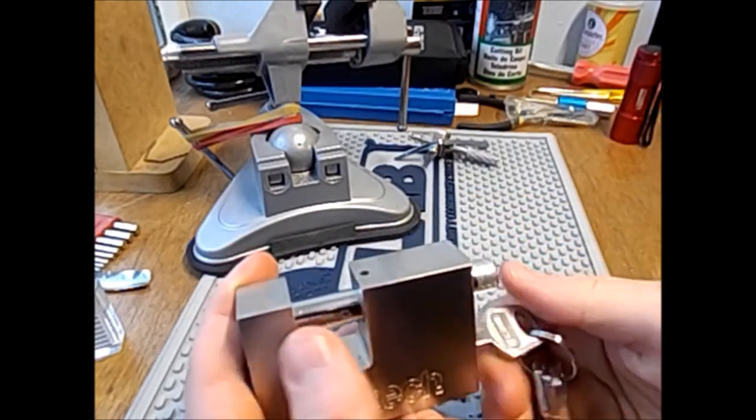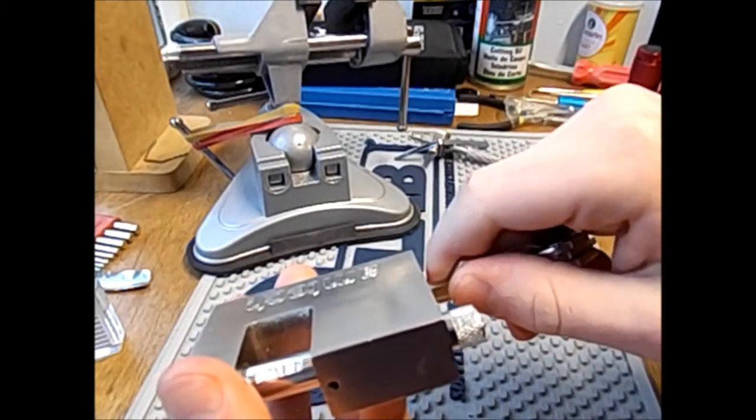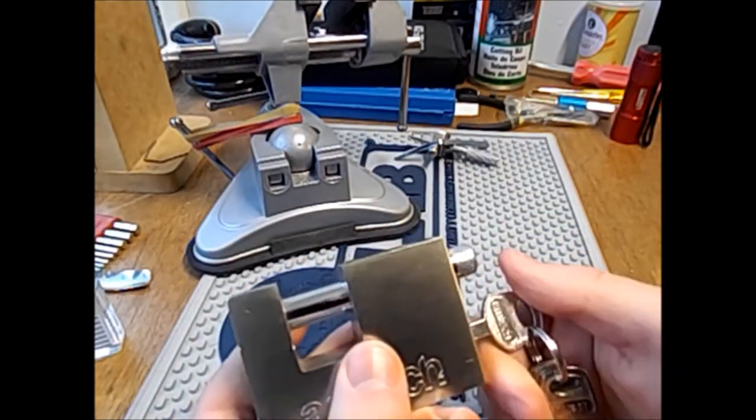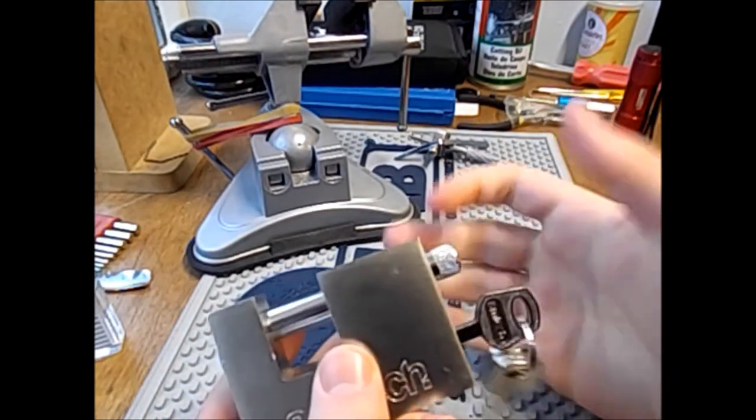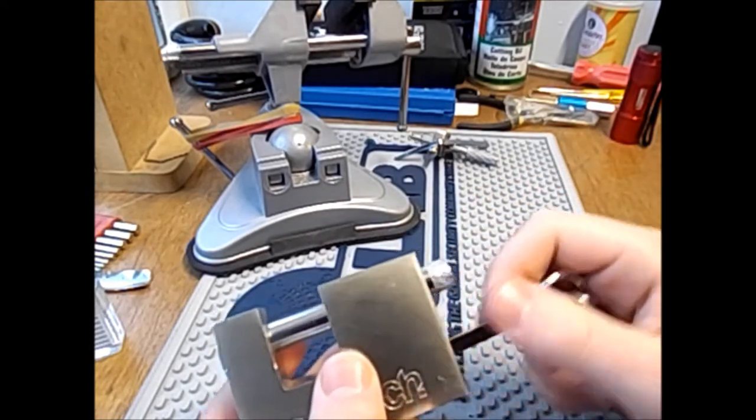And this is a reason why sometimes when you hold the lock a certain way, the key will turn partially. There will be a bit of resistance and then you'll be able to turn it the rest of the way. So if you find that maybe you've left one of these locks out in the weather, what can happen is the sidebar can get all greasy and gunked up.